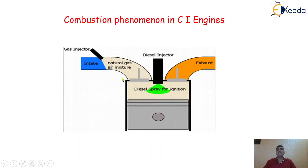Initially, during suction, when the piston is moving from top dead center to bottom dead center, only air comes inside the engine cylinder. Then, as the compression process starts to take place, the piston moves from BDC to TDC, and the amount of air that entered inside the engine cylinder gets compressed. Because of the compression, its temperature will increase and its pressure will also increase. So, at the end of the compression stroke, the diesel injector injects or sprays the amount of diesel inside the hot air.